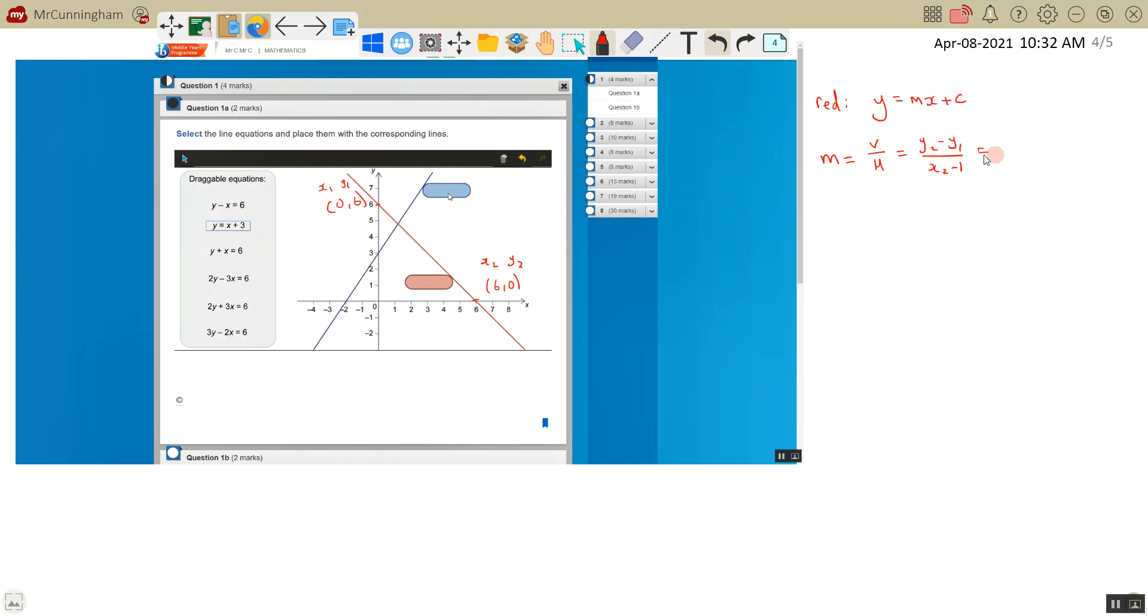If I substitute these into my formula: 0 minus 6 divided by 6 minus 0, I get -6 over 6 which is -1. So my equation is y equals -x. The c is the y-intercept, and the y-intercept for this line is 6, so it's -x plus 6. Let's have a quick look and see if I can see that anywhere here.